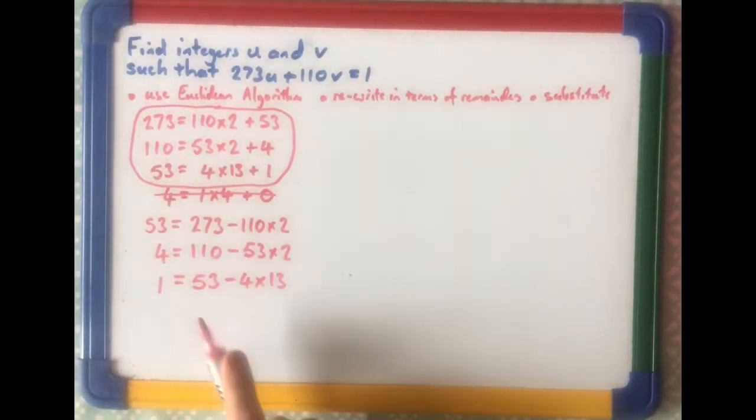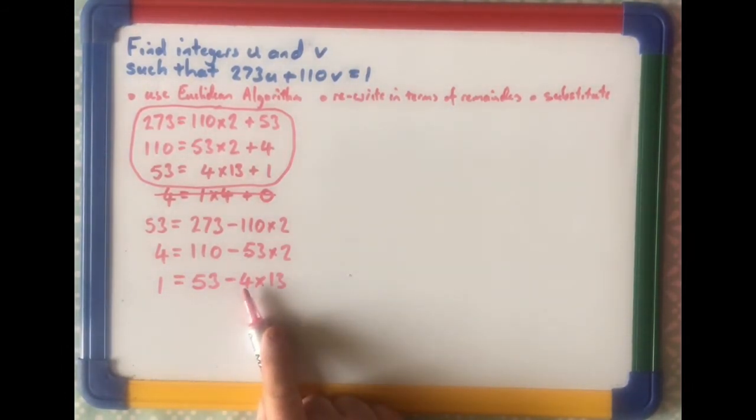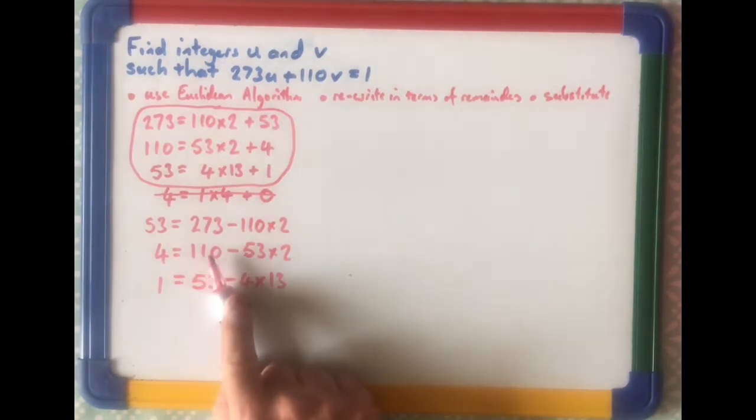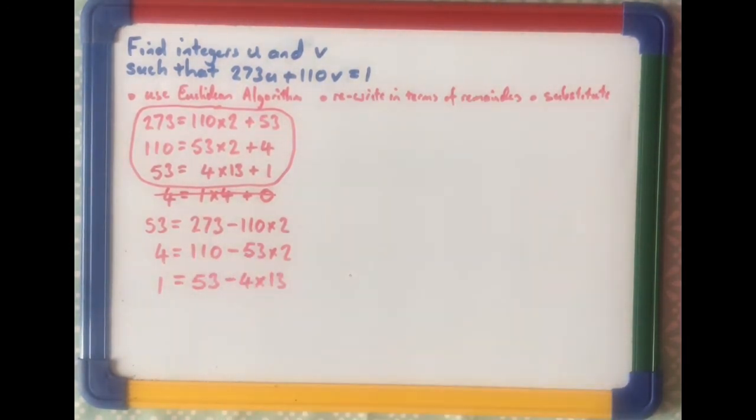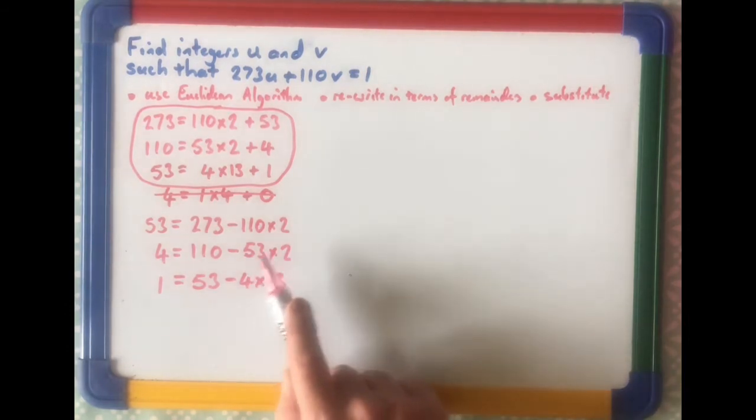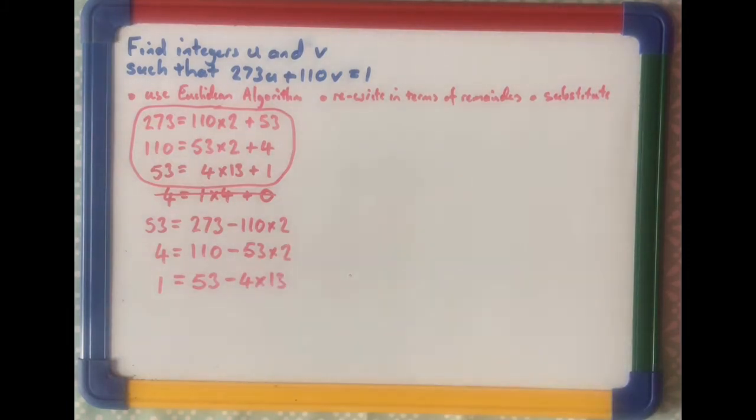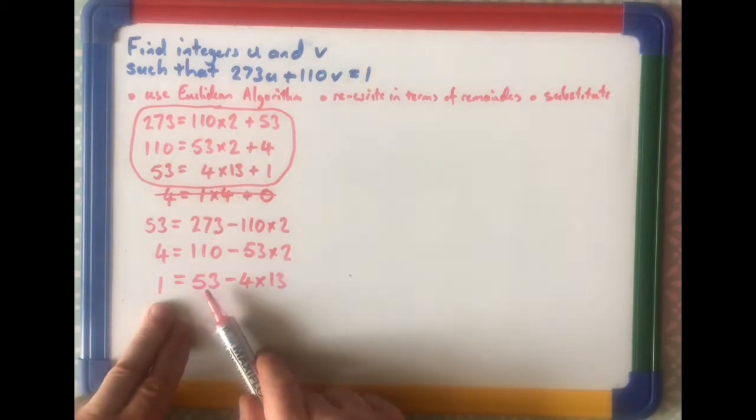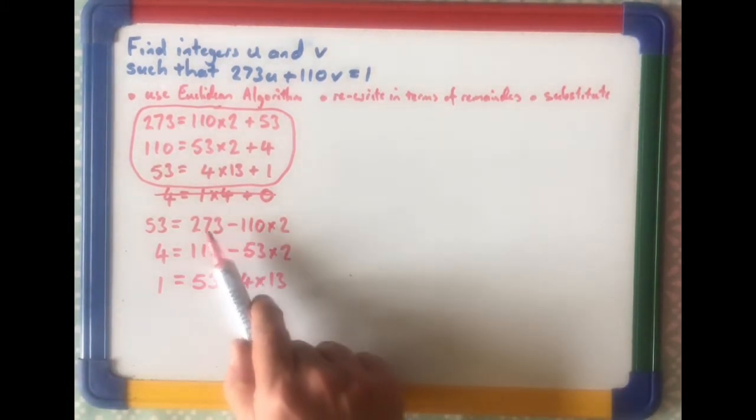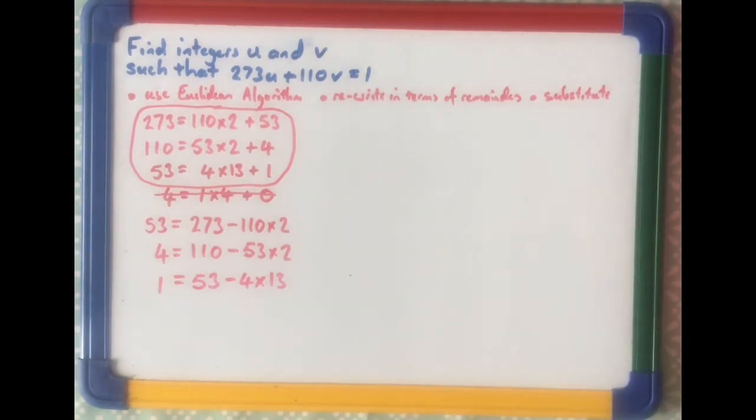When we're looking at this one, what we do is we look at this equation here, and we replace the 4 with 110 minus 53 times 2. And then when we've done that, we're going to replace the 53 with 273 minus 110 times 2. Because what that will do is that will give us this 1 equals something entirely in terms of 110 and 273, which is what we're after.